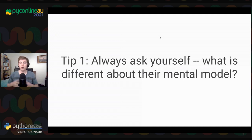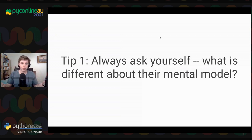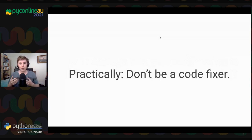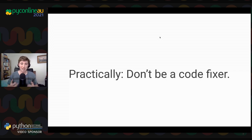The first tip is: always ask yourself, what is different about the person's mental model to yours? Or, what mental model do you want to communicate to them? Practically, try not to just be a code fixer. When helping a student, you don't want to just go in and fix their code — you want to understand why they thought that code was correct and improve their understanding as well.